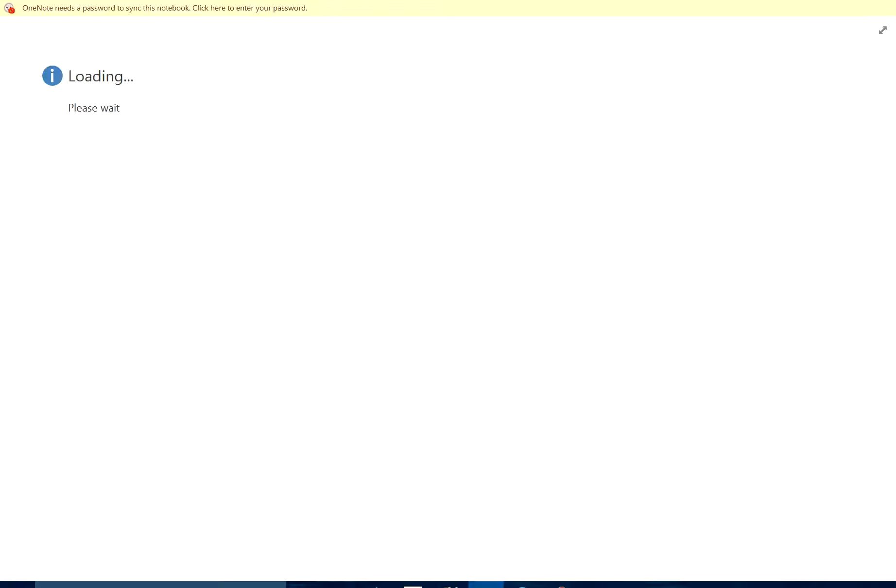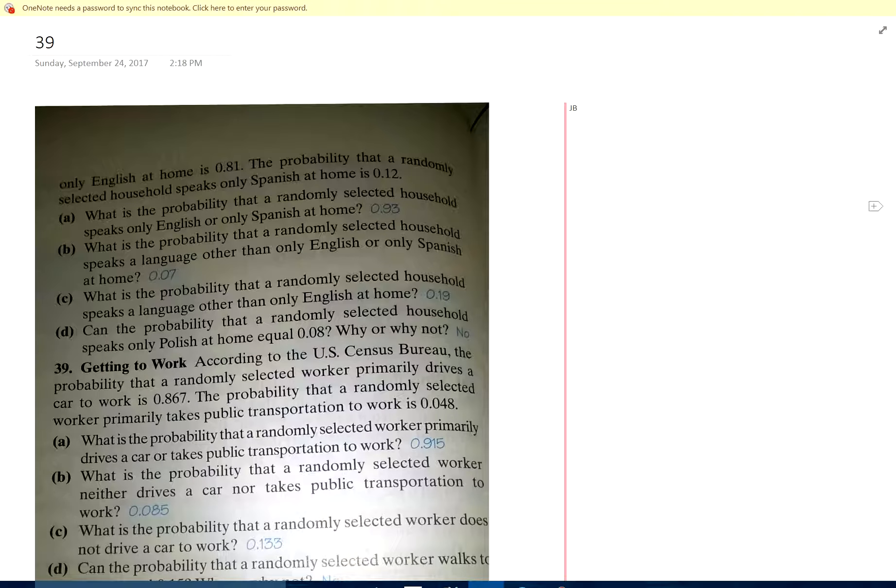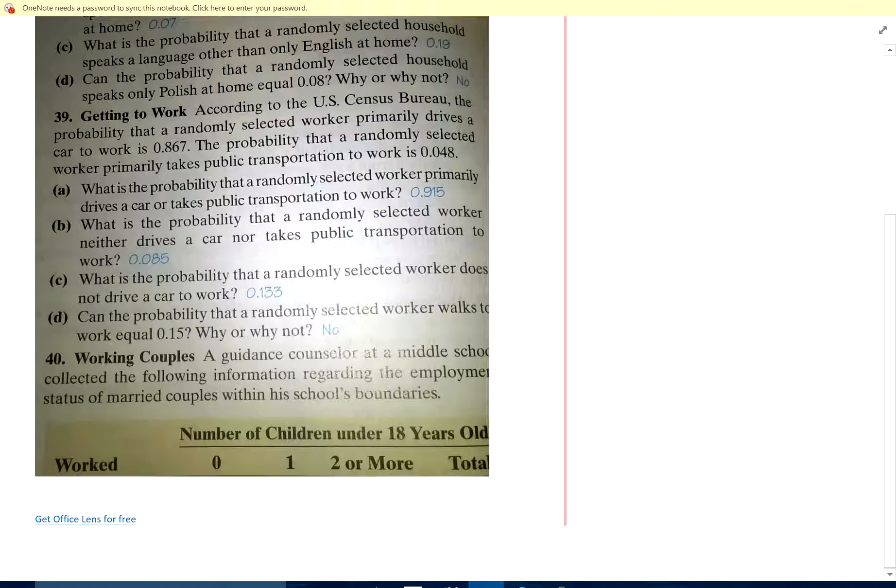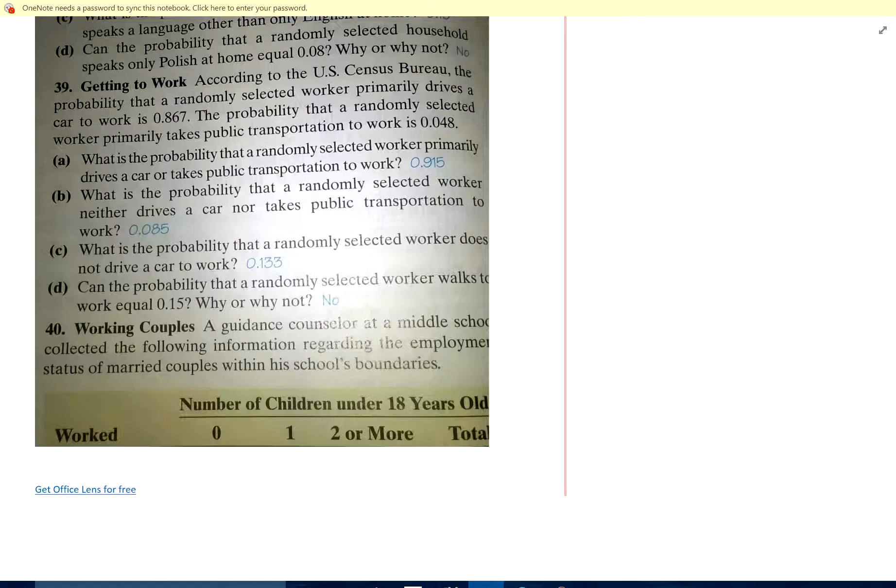Alright, number 39. Getting to work. According to the Census Bureau, the probability that a randomly selected worker primarily drives a car to work is 86.7%. Probability that a selected worker takes public transportation is 4.8%. The first thing I think of is what else do the others do? I guess they walk, take a bike, 4.8%. I guess it's almost 10%.